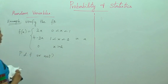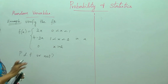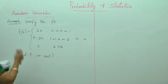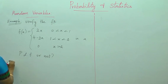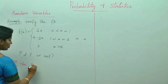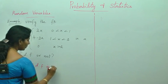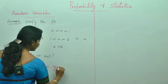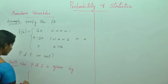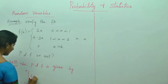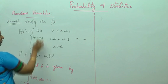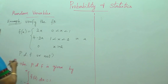The first step is to always write the formula before going into substitution, which is very important because you will get one mark for the formula. The probability density function condition is given by the integral from minus infinity to infinity of f(x) dx equals 1. We need to prove whether this given function satisfies that condition.